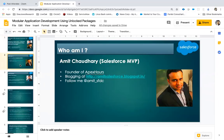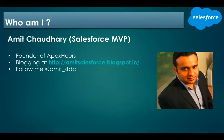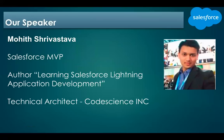My name is Amit Chhatri. I'm a Salesforce MVP and the founder of Apex Hours. I'm also an active blogger. My Twitter handle is AmitSalesforce. Let me hand over to Mohit. Thanks Amit. My name is Mohish Shrivastava. I've been working with Salesforce for almost eight years. I'm also a Salesforce MVP and author of the book 'Learning Salesforce Lightning Application Development'. I work as a technical architect at CodeScience INC.